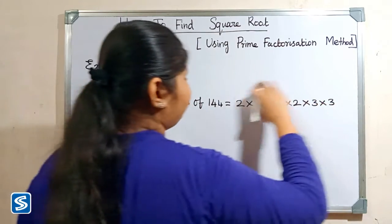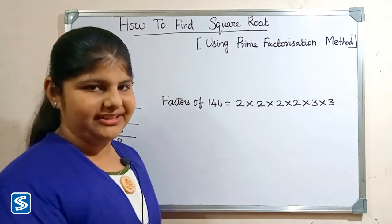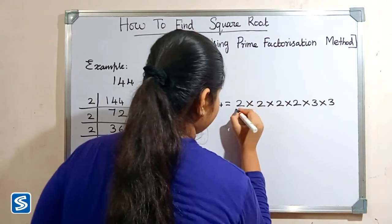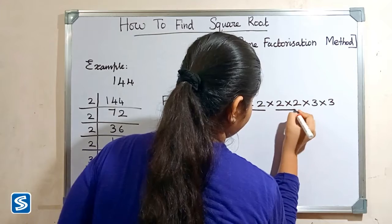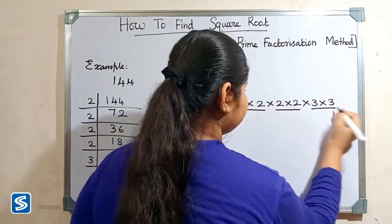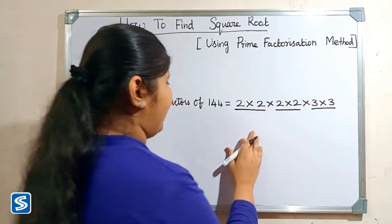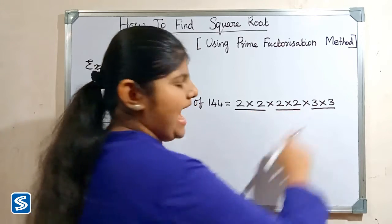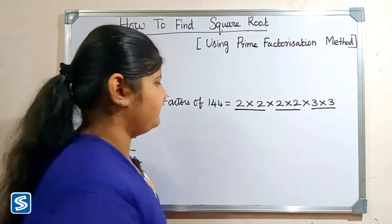Now we have to make pairs of similar factors. Then we have to take one factor from each pair and find the product.